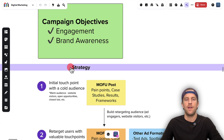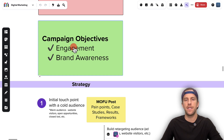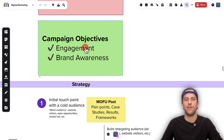Within campaign manager, there are two campaign objectives available if you want to select this ad format: engagement or brand awareness. I typically start with engagement. Engagement charges you per engagement — any type of like, click, or interaction on the ad. Brand awareness charges for reach and impressions. But typically I start out with the engagement objective.